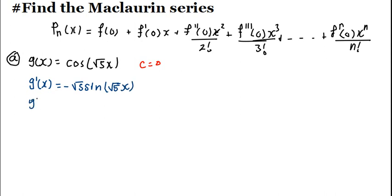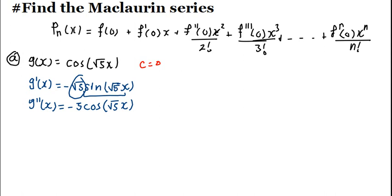The second derivative G double-prime of X is going to be minus 5·cos(√5·X). When you differentiate sine you get cosine, then you multiply by the derivative of the angle, which is √5. So when you multiply by that √5 you get the 5 there — just to clarify, that's a 5, not a 3.